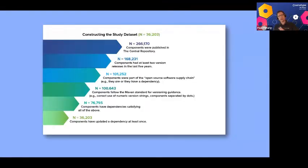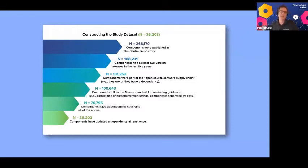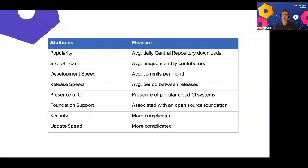We started with a data set of over 250,000 different components and broke that down by attributes: does it have at least two versions, is it part of a software supply chain, does it have dependencies? We ended up with about 36,000 components for analysis. Attributes included popularity, download counts, team size, development speed measured by commits per month, as well as security and update speed.